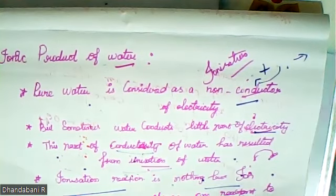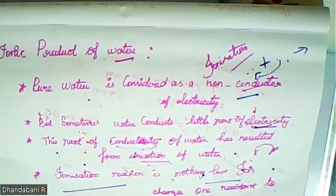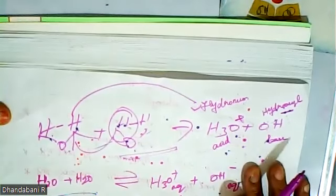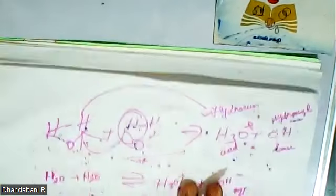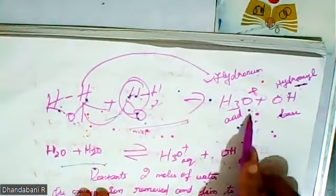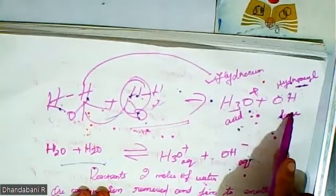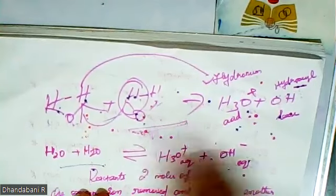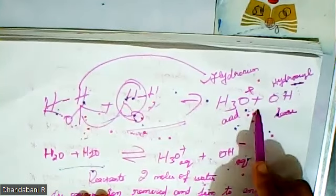This is called as ionization reaction. Here I am taking this reaction. In this reaction, 2 moles of water form hydronium ion and the hydroxyl ion. These are the 2 reactants, and these are the 2 products.